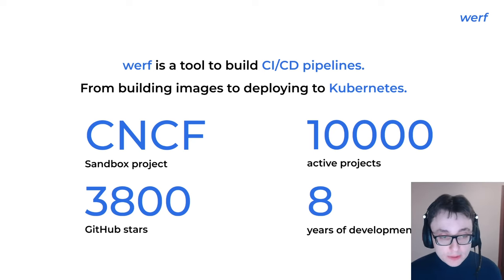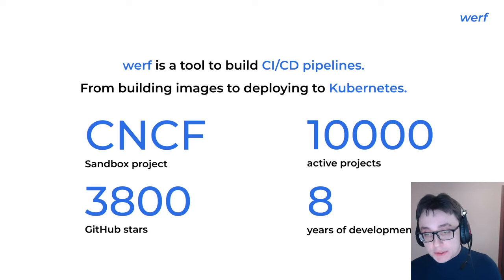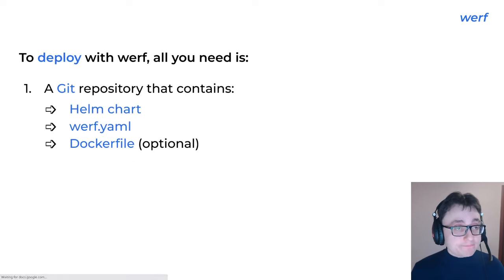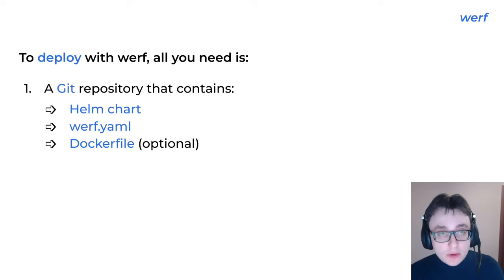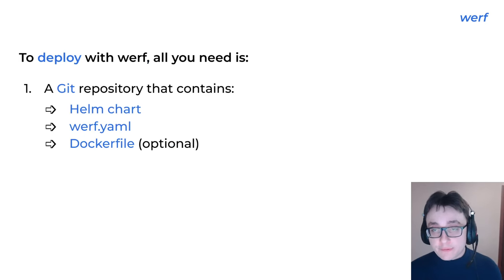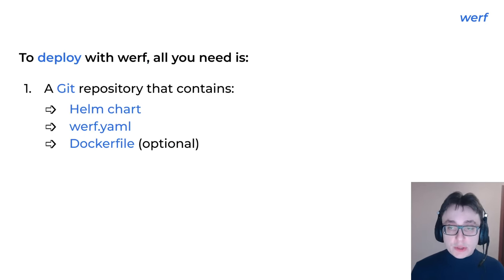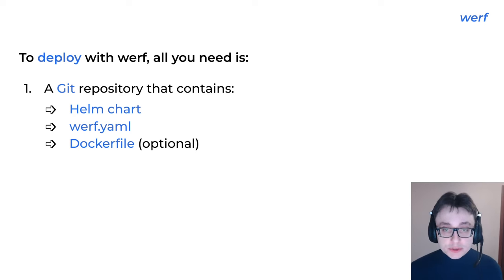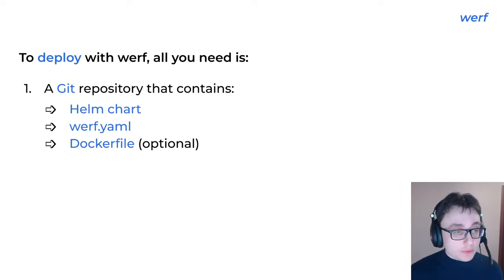Werf is a CNCF sandbox project. We have 10,000 active projects running on Werf, which means building images and deploying to Kubernetes. We have 3,800 GitHub stars and 8 years of pretty active development. To deploy something with Werf, all you need is a Git repository containing a Helm chart, a werf.yml file, and optionally a Dockerfile.